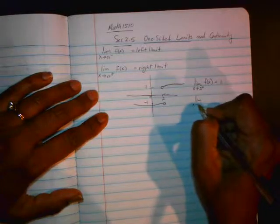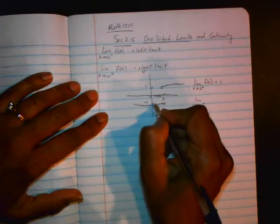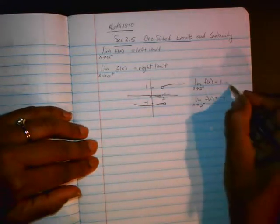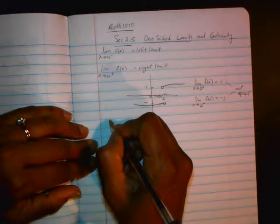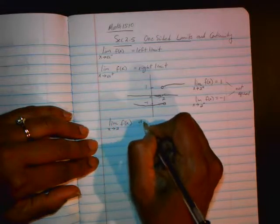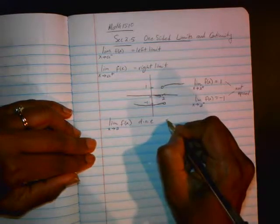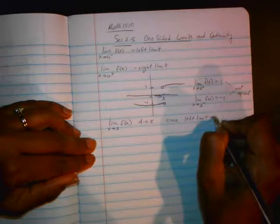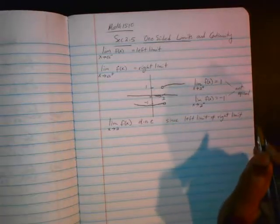The left hand limit, as you approach 2 from the left hand side, the y value is approaching negative 1. Now, if the left and the right hand limits are not equal, then the limit as x goes to 2 of the function does not exist. We use that abbreviation that we discussed in the last section.